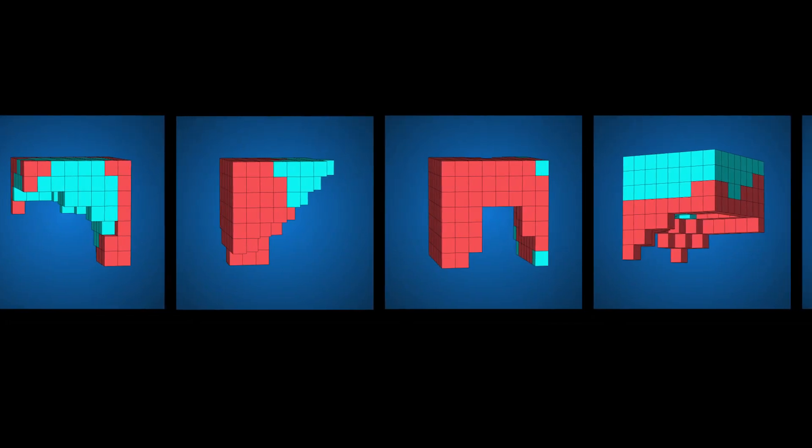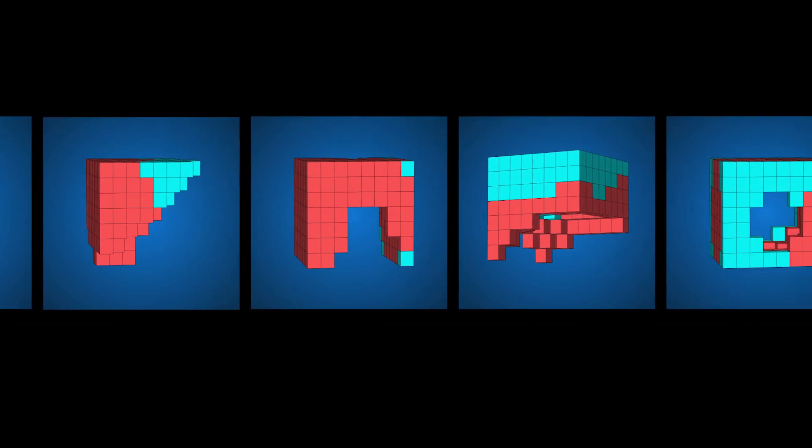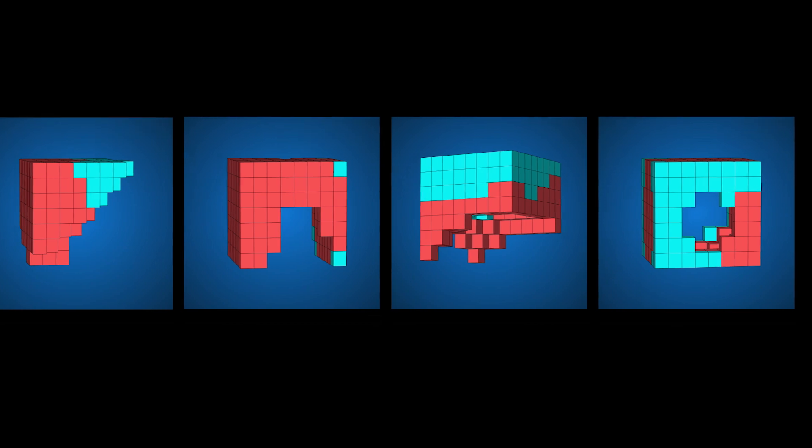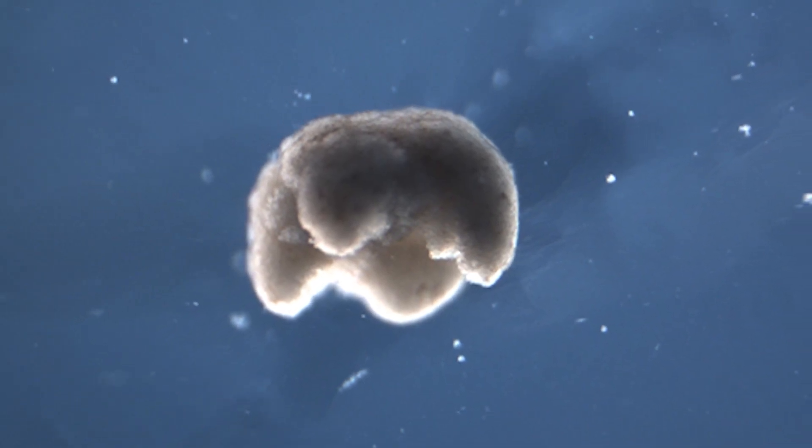Then the most successful designs were kept and randomly mutated for a new round of simulations. By doing this over and over again the computer simulates thousands of different potential designs always selecting the best and that's why it's called an evolutionary algorithm. It's kind of like survival of the fittest in a computer.